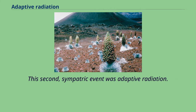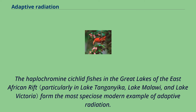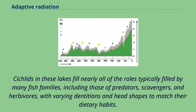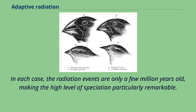The haplochromine cichlid fishes in the Great Lakes of the East African Rift form the most speciose modern example of adaptive radiation. These lakes are believed to be home to about 2,000 different species of cichlid, spanning a wide range of ecological roles and morphological characteristics. Cichlids in these lakes fill nearly all of the roles typically filled by many fish families, including those of predators, scavengers, and herbivores, with varying dentitions and head shapes to match their dietary habits. In each case, the radiation events are only a few million years old, making the high level of speciation particularly remarkable.